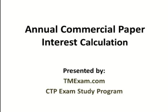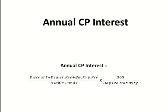Hello, and thank you for joining us for an overview of the annual commercial paper interest calculation. The CP interest calculation is the discount plus the dealer fee plus the backup fee — which is all the fees you're going to pay for the commercial paper — divided by the usable funds that you'll receive or have access to.